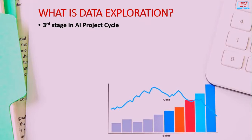First, let us understand what data exploration is. This is the third stage in the AI project cycle. The first stage, problem scoping, and the second stage, data acquisition, have already been covered in previous videos. In the previous stage, we collected data which is authentic, accurate, and relevant, focused on the project goal. Now we need to understand why we want to explore the data before training the AI model.